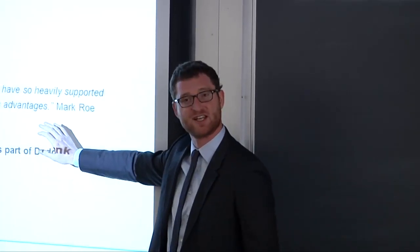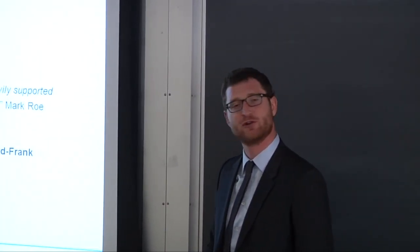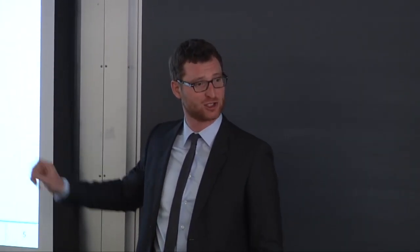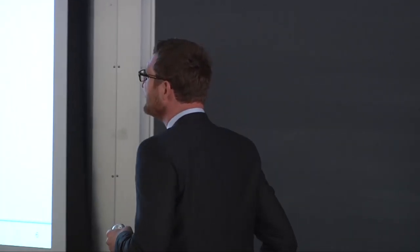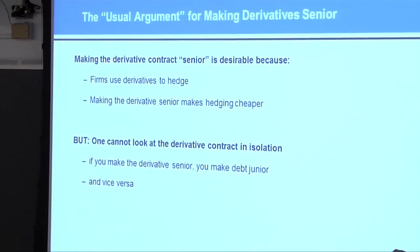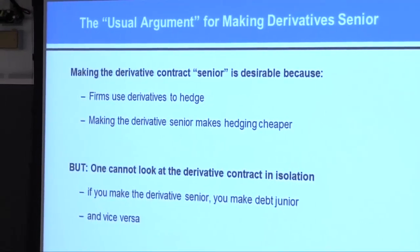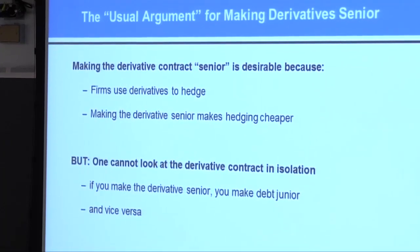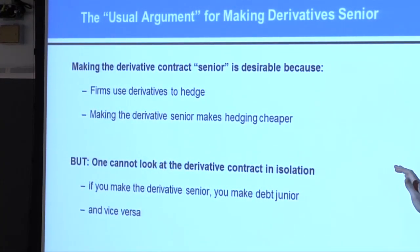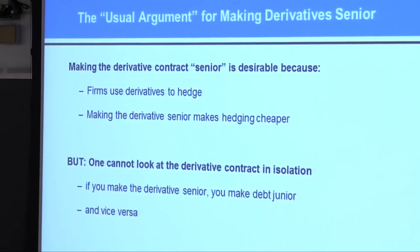This also led to discussion as part of the Dodd-Frank debate, but the current version of Dodd-Frank does not do very much about this issue. Now, why would somebody argue that derivatives should be treated in a more privileged way than creditors? Let me give you one argument — I'll call it the 'usual argument' — and then I'll use a simple example to convince you that maybe this argument is not such a good argument.